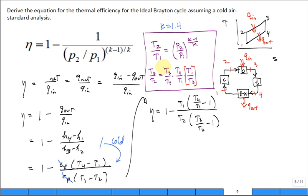They cancel, they're equal to one. And so this result gives me just T four divided by T one. So T three divided by T two is the same as T four divided by T one.